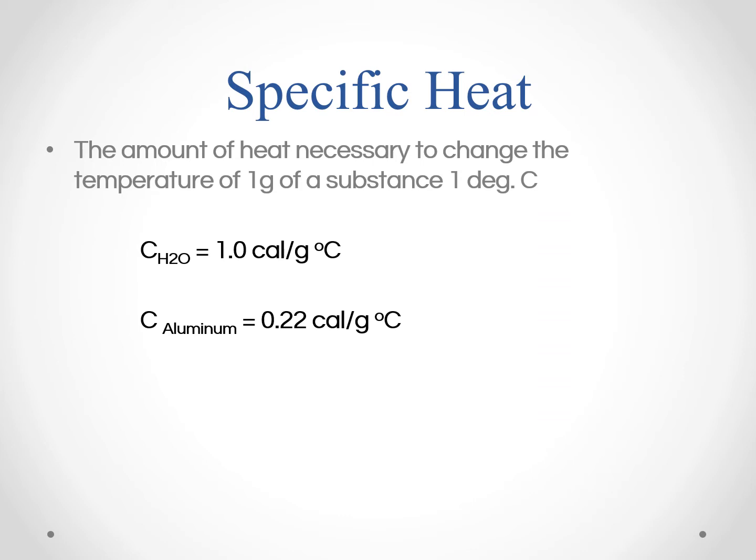Specific heat is the amount of heat needed to change the temperature of one gram of a substance one degree Celsius. So these are already measured for water and aluminum. We're really just worried about the one for water for this lab, which is one calorie per gram degree Celsius. So this is the value for c that you'll use in your equation to find the heat change.